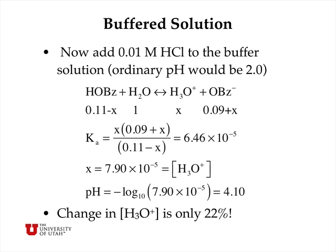We formulate this problem by noting that the initial benzoic acid concentration is increased by 0.01 moles per liter to 0.11, and the benzoate anion concentration is decreased by 0.01 to 0.09. Writing the acid equation in the usual way and solving, we have 0.09 moles per liter plus x of the base and 0.11 moles per liter minus x of the acid. Ignoring the x's, we find that x, the hydronium ion concentration, is 7.9 times 10 to the minus 5 moles per liter.